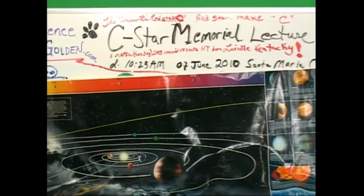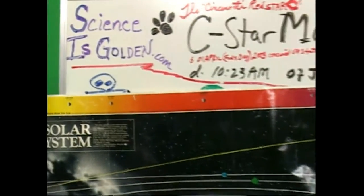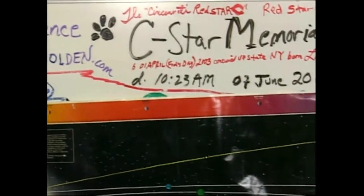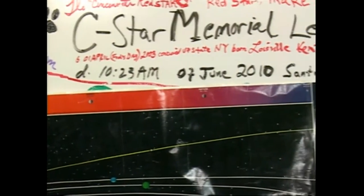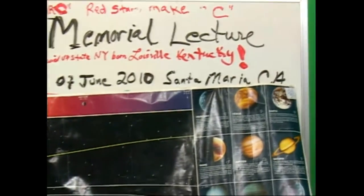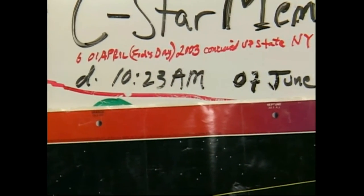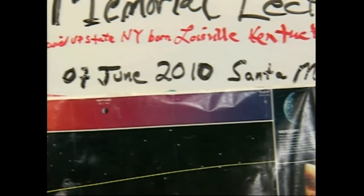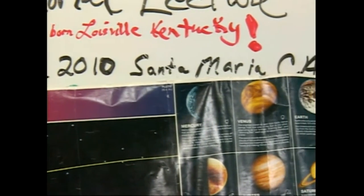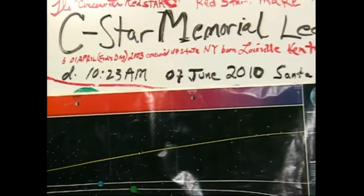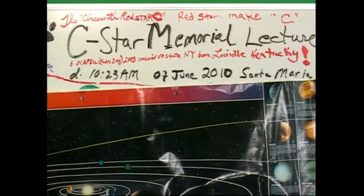Seven years C-Star has been teaching science to kids across America. She was born on April Fool's Day in Louisville, Kentucky. She was conceived in upstate New York. And she died at 10:23 on the 7th of June, the Monday, in Santa Maria. Another Santa Maria curse.